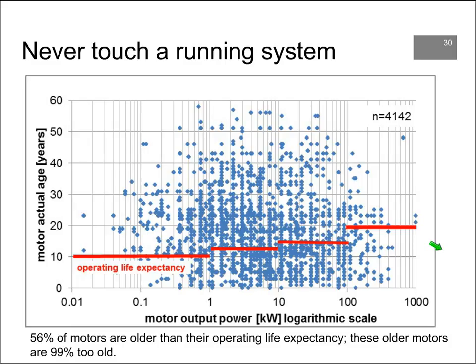This Swiss research covers 4,142 motors. Plotting the age of those motors shows that the expected operating life is 10 to 20 years depending on motor size. Many motors are far older than their expected operating life — in fact, more than half of the motors are twice as old as their expected operating life expectancy. This means there are significant savings to be gained by replacing them with efficient modern motors.